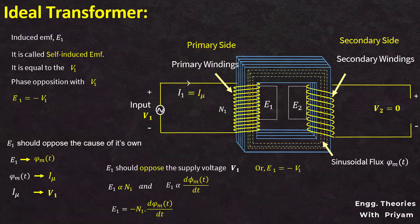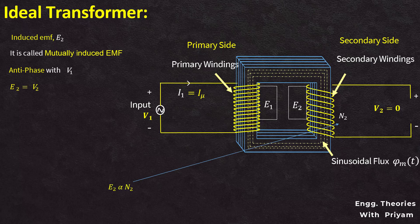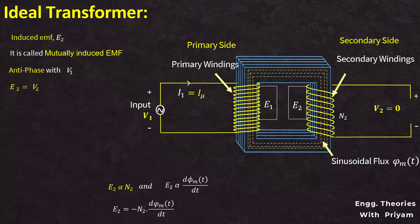The induced EMF e2 is called the mutually induced EMF. Similar to the self-induced EMF e1, it is also in phase with the alternating supply voltage V1. If there is no loss in the case of an ideal transformer, then this induced voltage e2 will be equal to the voltage across the load, V2. The magnitude of this induced EMF e2 is proportional to the number of turns in the secondary winding, n2, and the rate of change of flux d(phi_m)/dt. So e2 is equal to minus n2 × d(phi_mt)/dt.